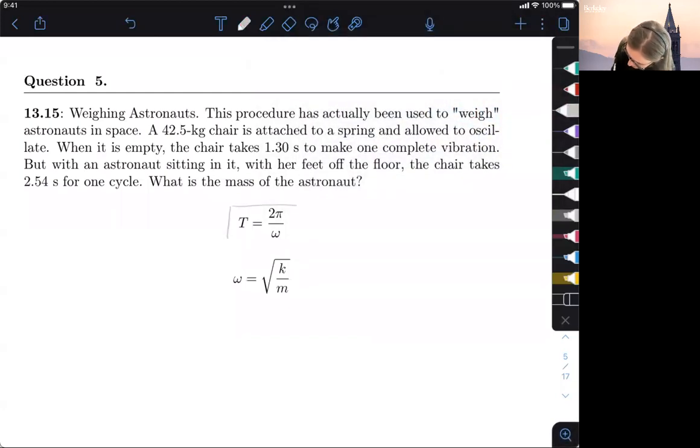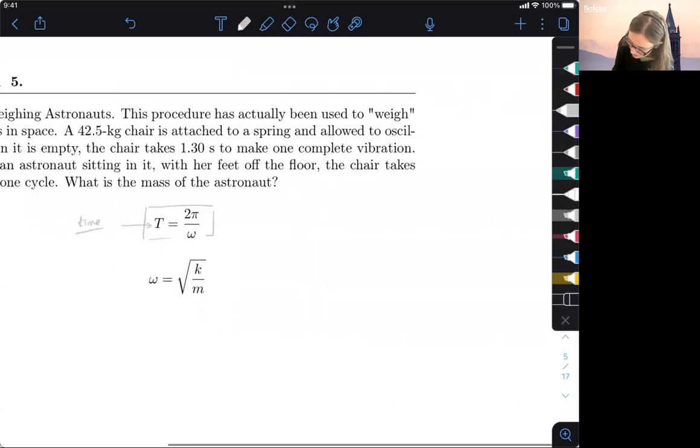We got this guy, this is our period, so this big T is time. It's in seconds, and what it means is basically the time it takes for one oscillation cycle.